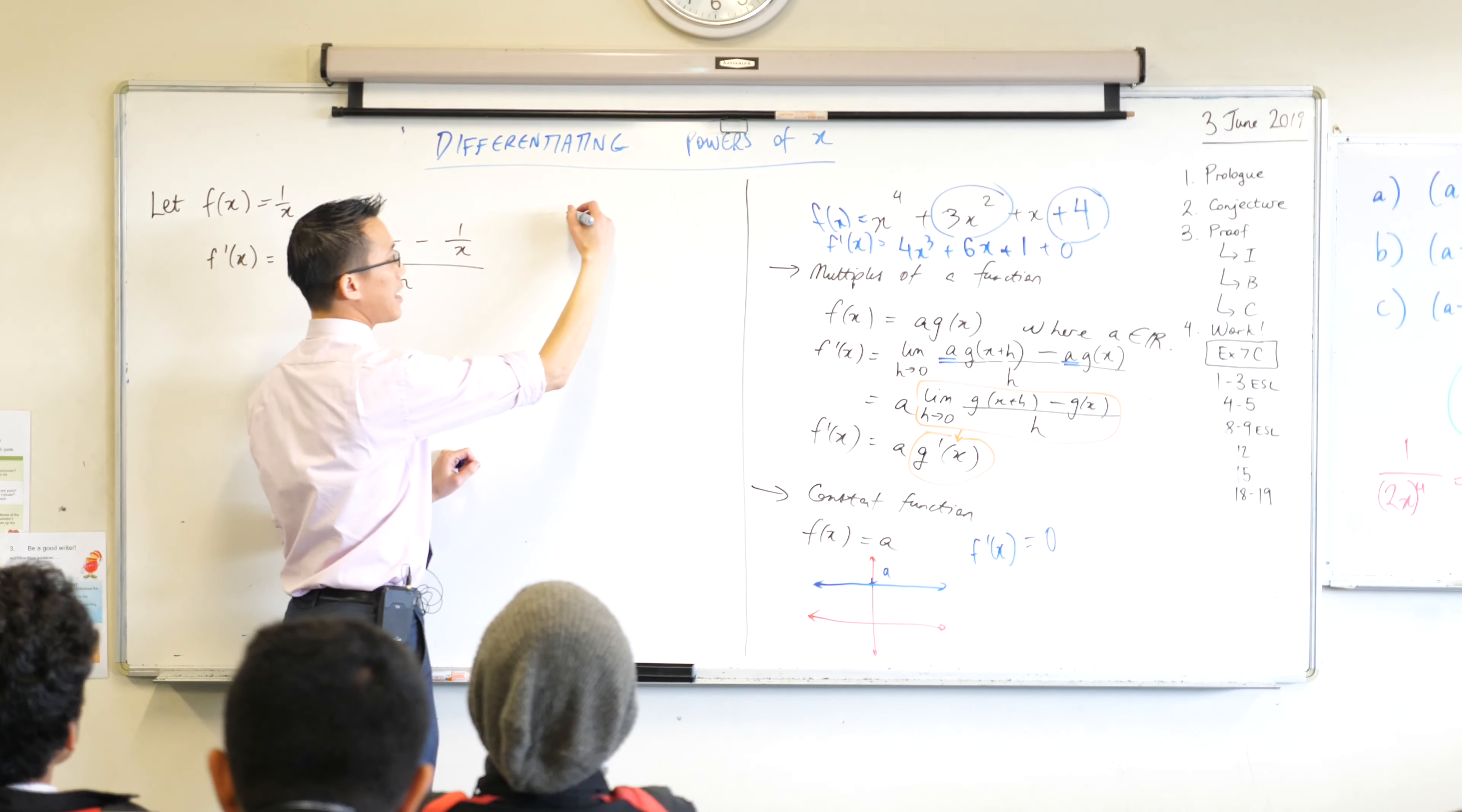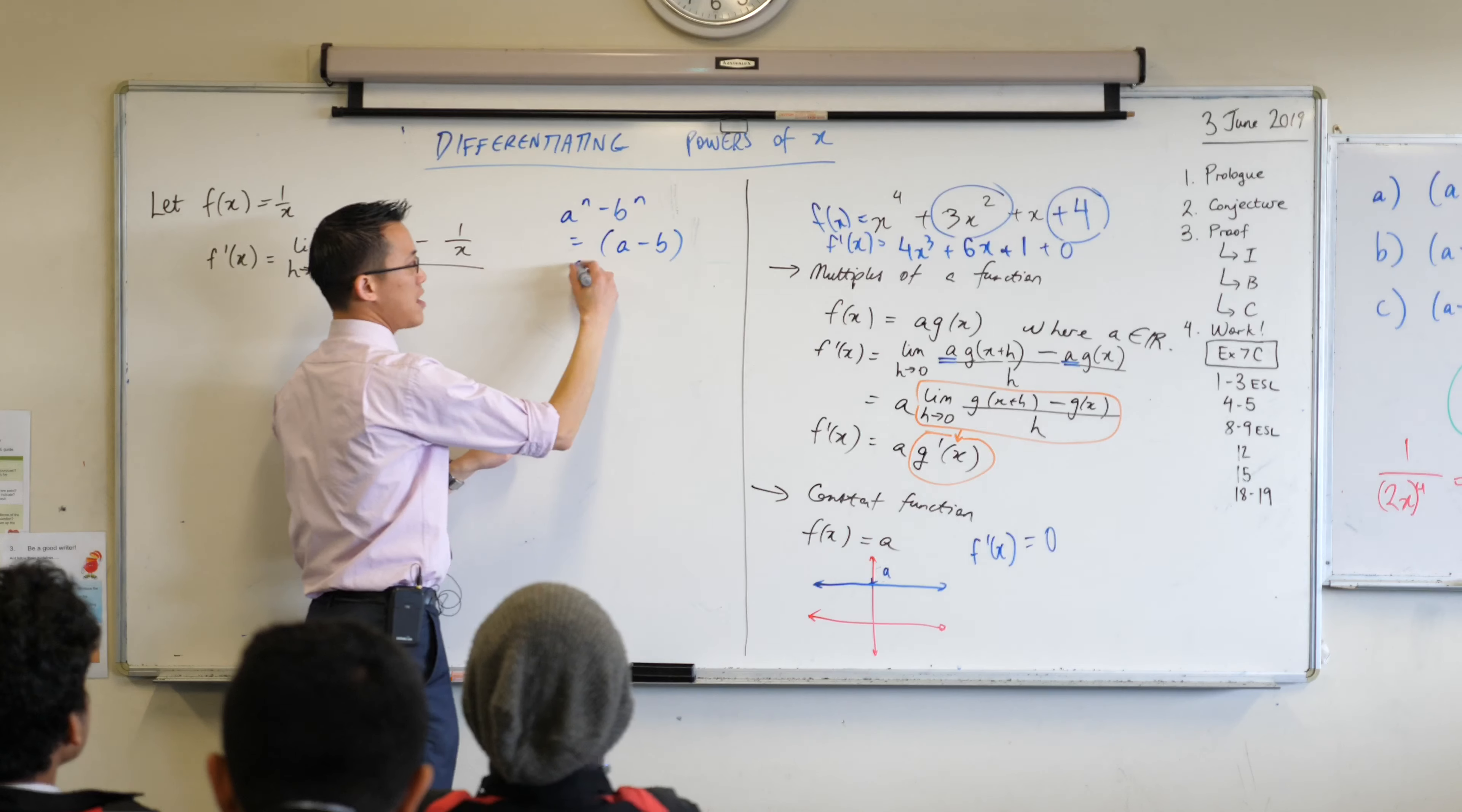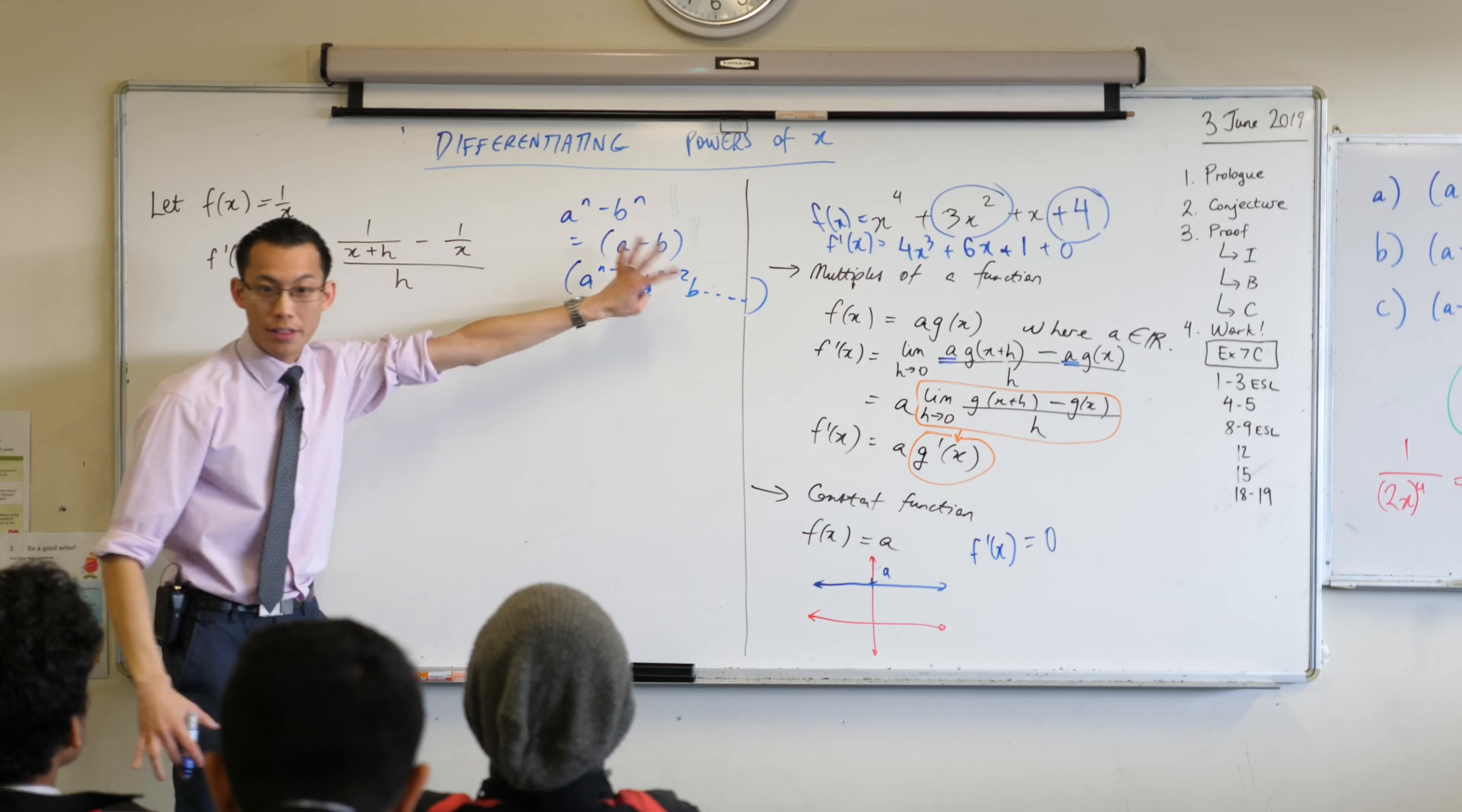For instance, we said that a to the power of n minus b to the power of n equals, and then we had an a minus b to start just like we always did, and then you've got this gross a^(n-1)b, sorry a^(n-2)b, blah blah blah, we had all that stuff in there right.